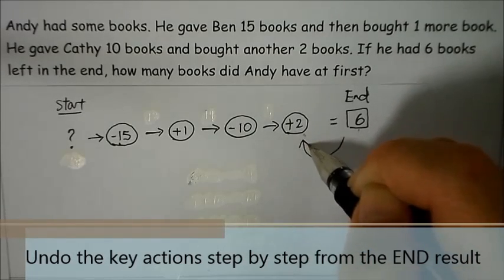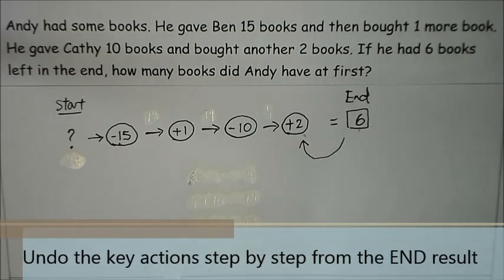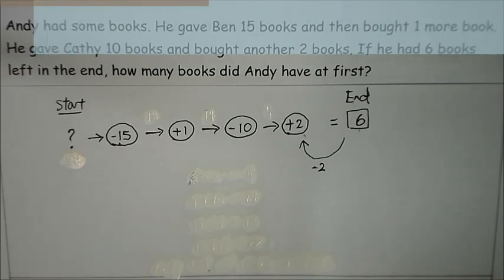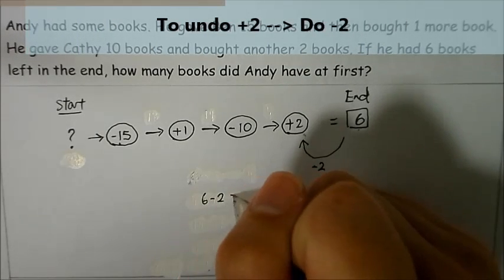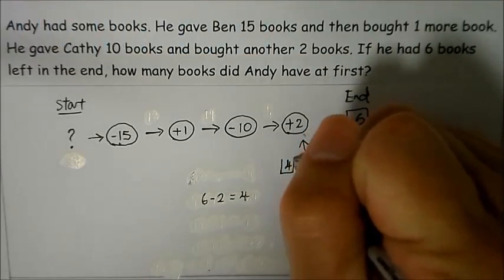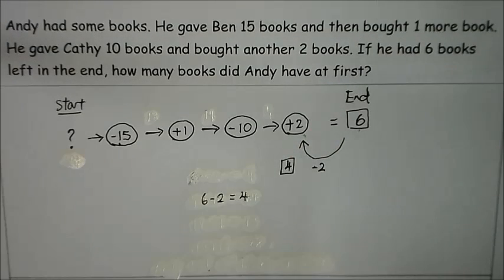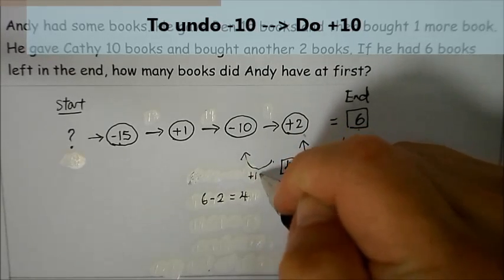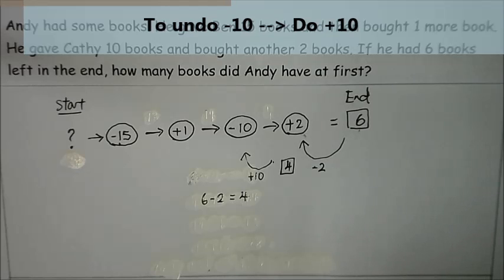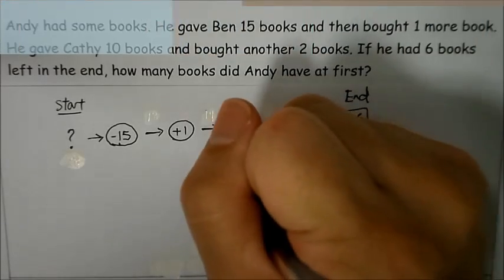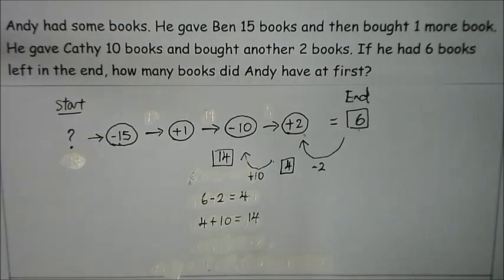From here I would use six minus two. Why? Because we take it that Andy did not buy the two books. So I would write down six minus two equals to four, which is written here. Then I would use four plus the ten. Why? To state that Andy did not give Katie the ten books because we are working backwards. So four plus ten gives me fourteen.